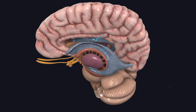Each lateral ventricle is roughly a C-shaped cavity situated within each cerebral hemisphere. The lateral ventricle wraps itself around the thalamus, lentiform nucleus, and caudate nucleus. It is lined by ependyma and filled with cerebrospinal fluid, with a capacity of about 7 to 10 ml.